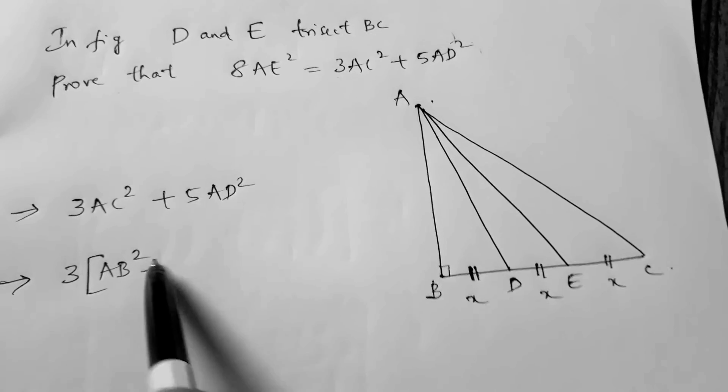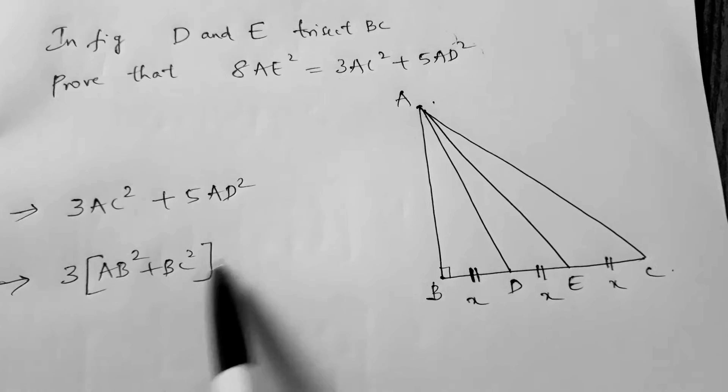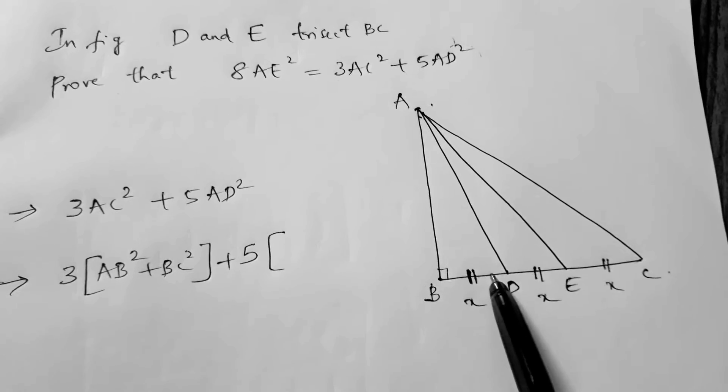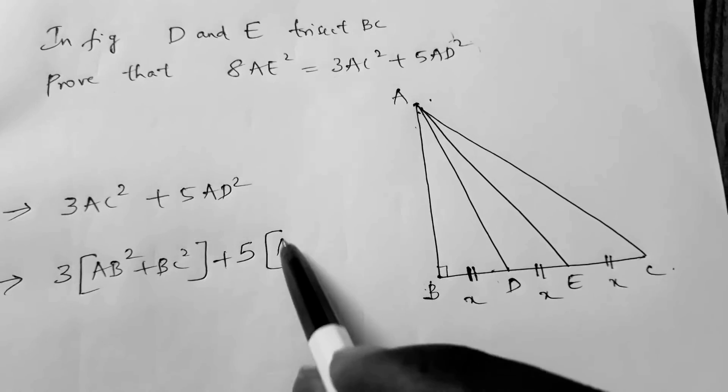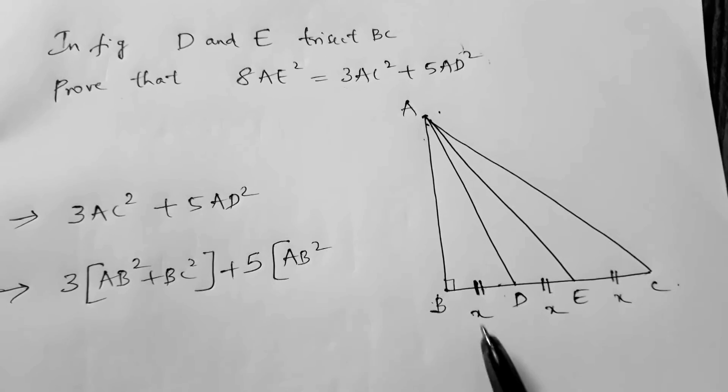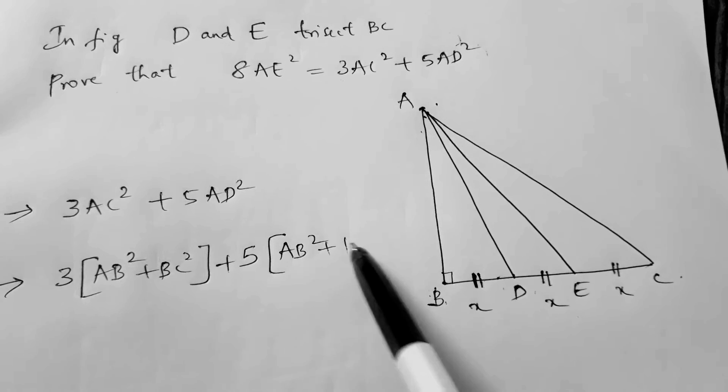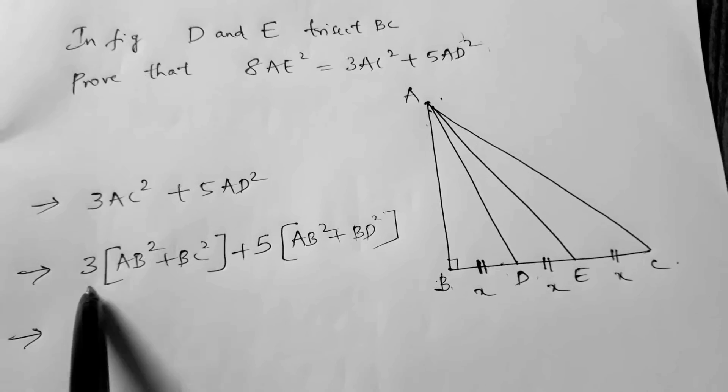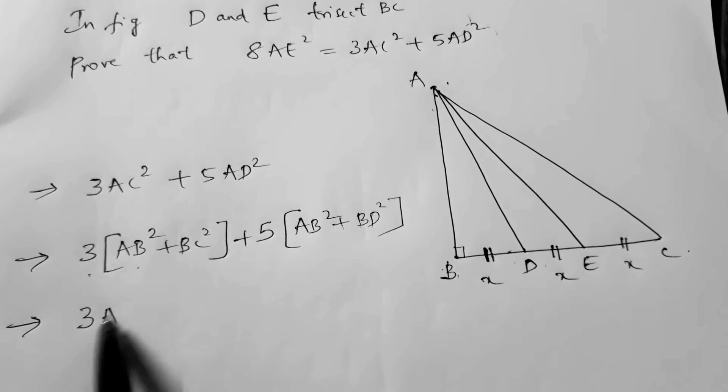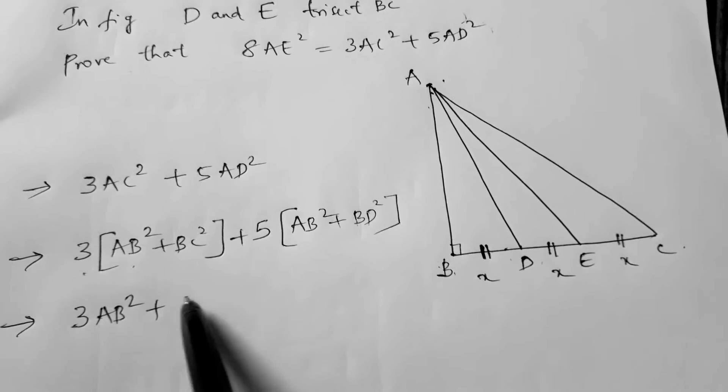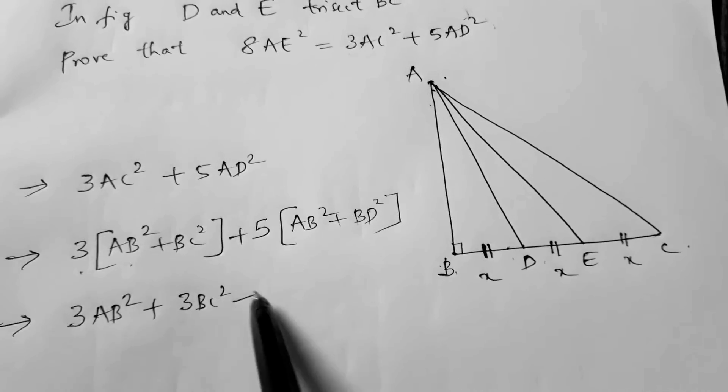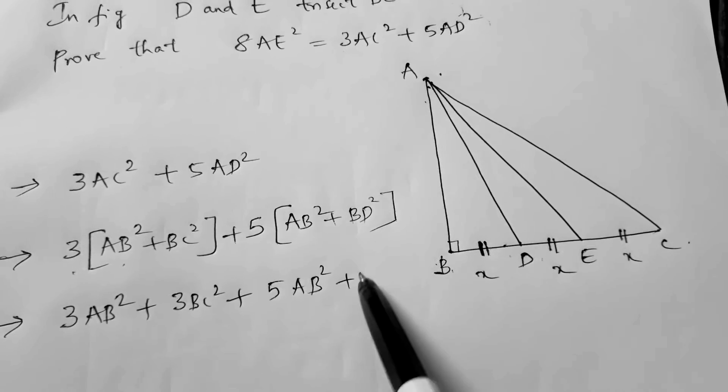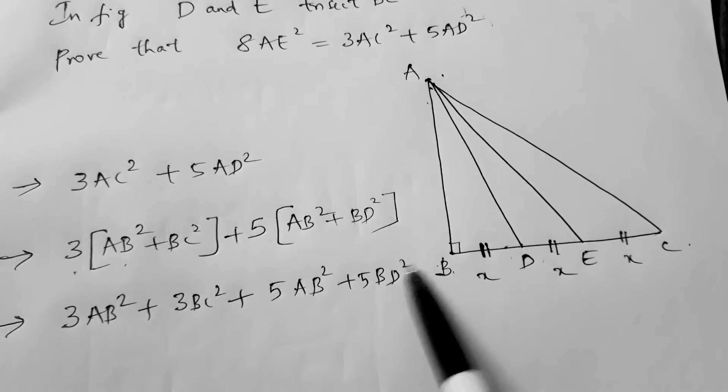AB² plus BC² plus 5 times AD². In triangle ABD, if I apply Pythagorean theorem, AD² is AB² plus BD². So this becomes 3AB² plus 3BC² plus 5AB² plus 5BD².